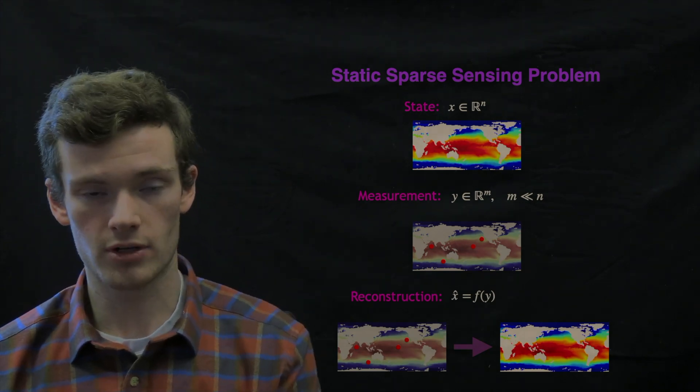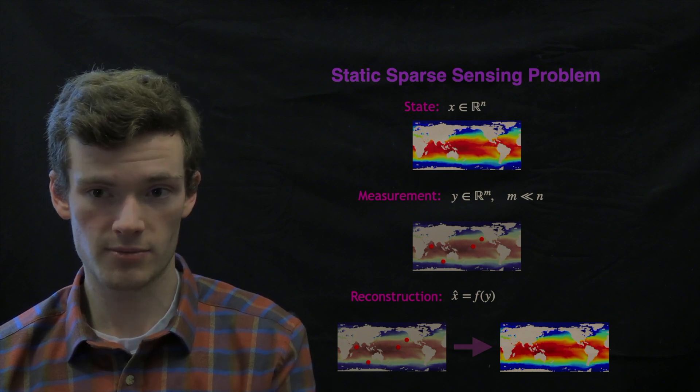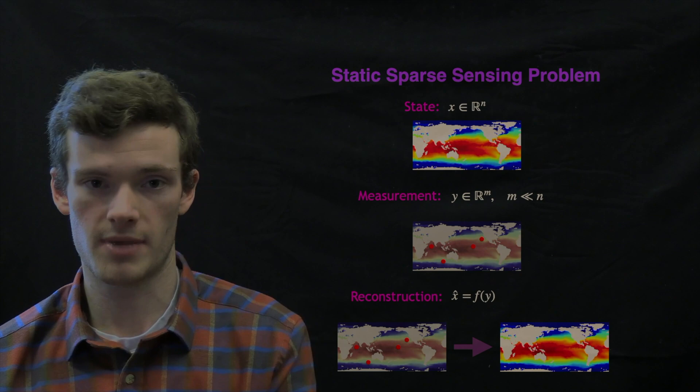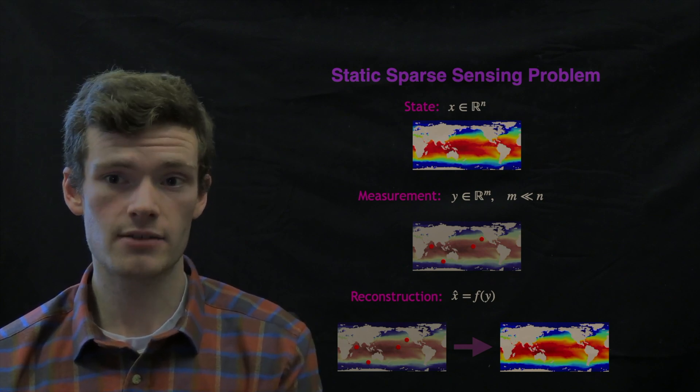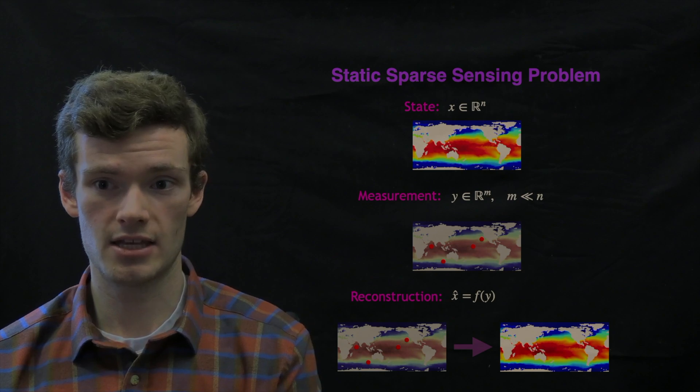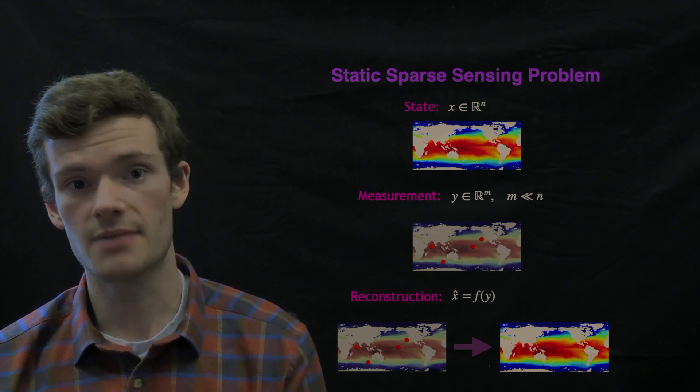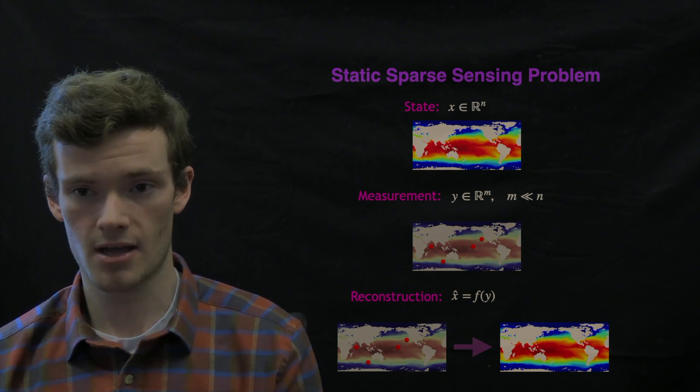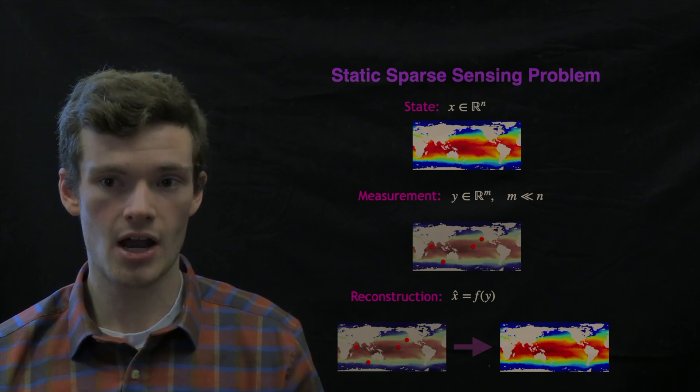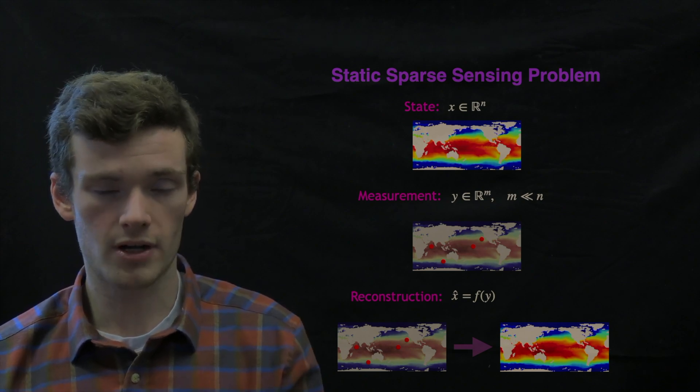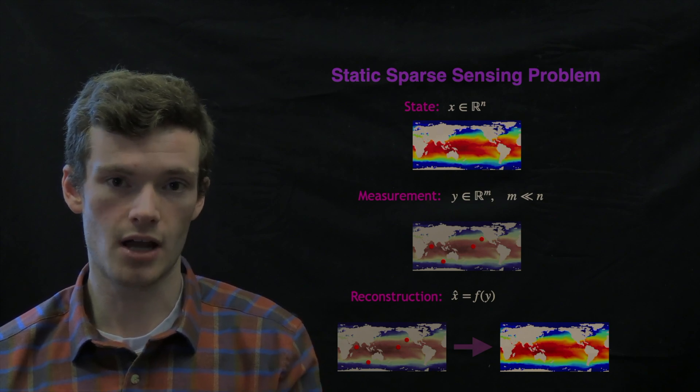And we're interested in performing a reconstruction from these sparse sensor measurements in the field to reconstruct this whole field. So mathematically, we're looking for some map F that goes from the set of our sensor measurements to the high dimensional state, or at least some approximation of the high dimensional state. I call this a static sensing problem because the form given here relies only on sensor measurements at time t to reconstruct the global field at time t.